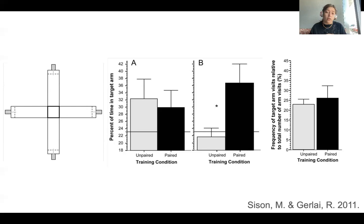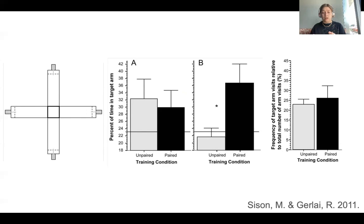Panel A here is talking about how, within their first training period, there's not a difference between the paired and the unpaired for the amount of time that they spent in the target arm. In the probe trial on Panel B, we see that there is a difference — the paired condition, where they had the stimulus associated with a certain region, they spent more time hanging out where the reward was, whereas the unpaired groups didn't spend as much time with the reward.